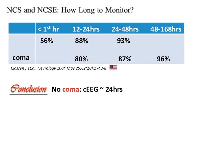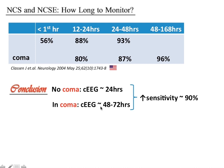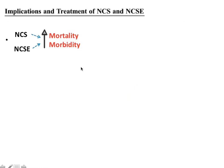The conclusions from Claassen's study: if the patient is not in coma, continuous EEG for 24 to 48 hours is reasonable. If the patient is in coma, monitoring for 48 to 72 hours is recommended, increasing sensitivity to 90 percent. If the patient has PLEDs — periodic lateralized epileptiform discharges — continuous EEG should be done for more than 24 hours.